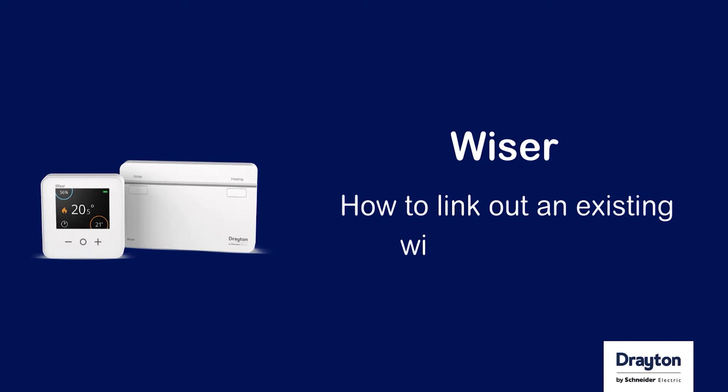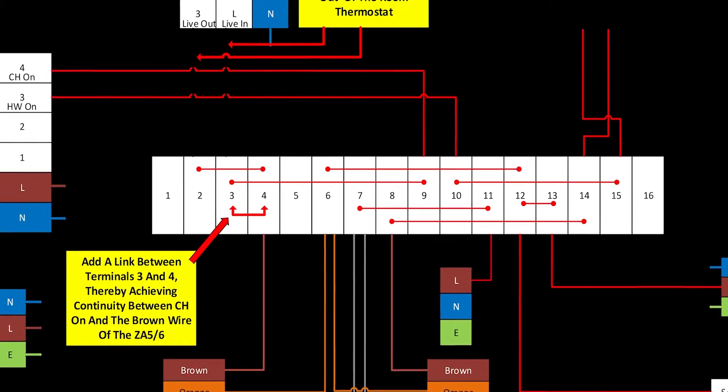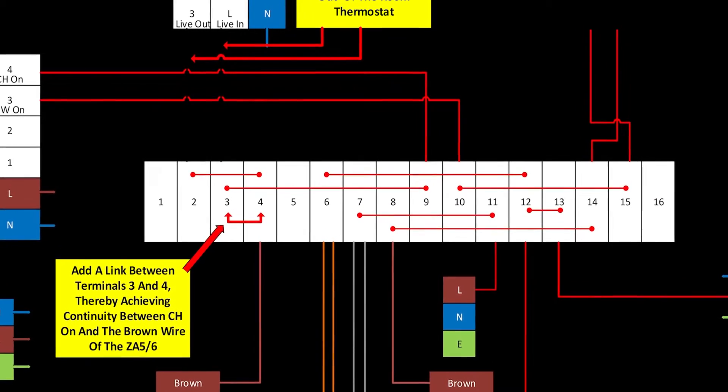How to link out an existing wired thermostat. If there's an existing wired thermostat installed, you'll need to remove this from the system in the wiring center.